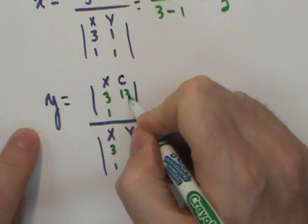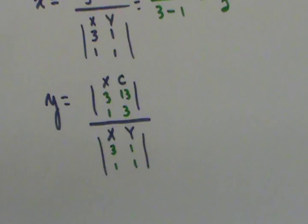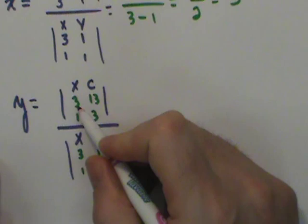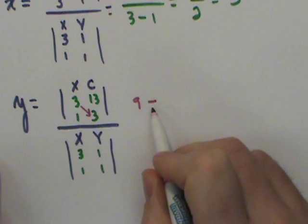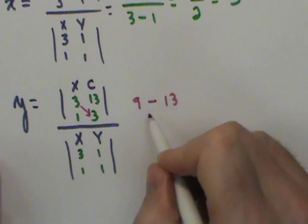And then in the top, I'll say 3, 1, 13, 3. As I set up that determinant, it's going to be a difference of the cross products. And so, I'll say 3 times 3 is 9, minus, because that's part of the formula, part of the procedure, 1 times 13 is 13,